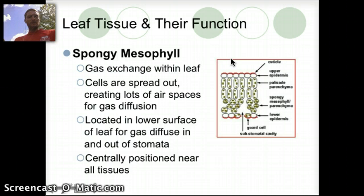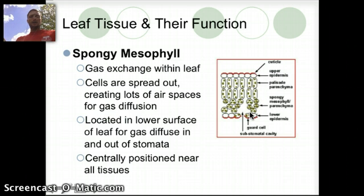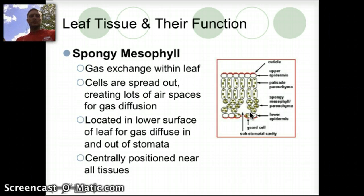The spongy mesophyll, which is on the bottom portion of the leaf, is primarily for gas exchange within the leaf. The cells are spread out so that gases can diffuse in and out of those spaces. They're very centrally positioned near all of the tissues so that once oxygen is diffused within the leaf, it can be moved throughout the cell.